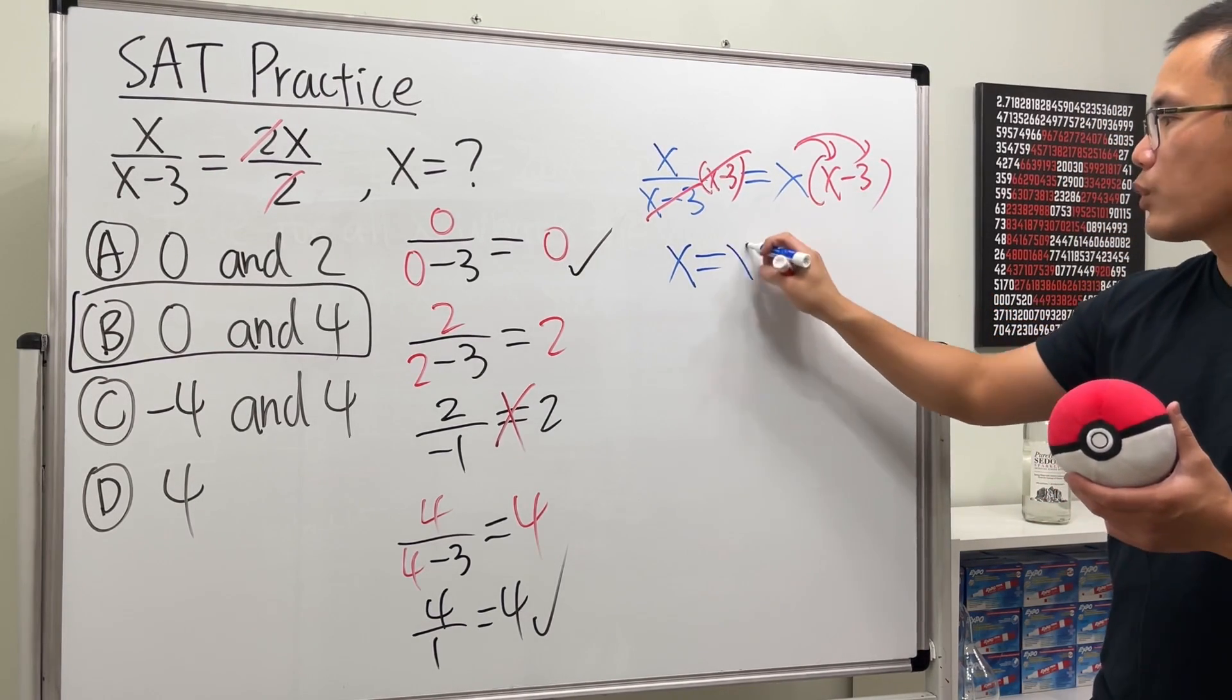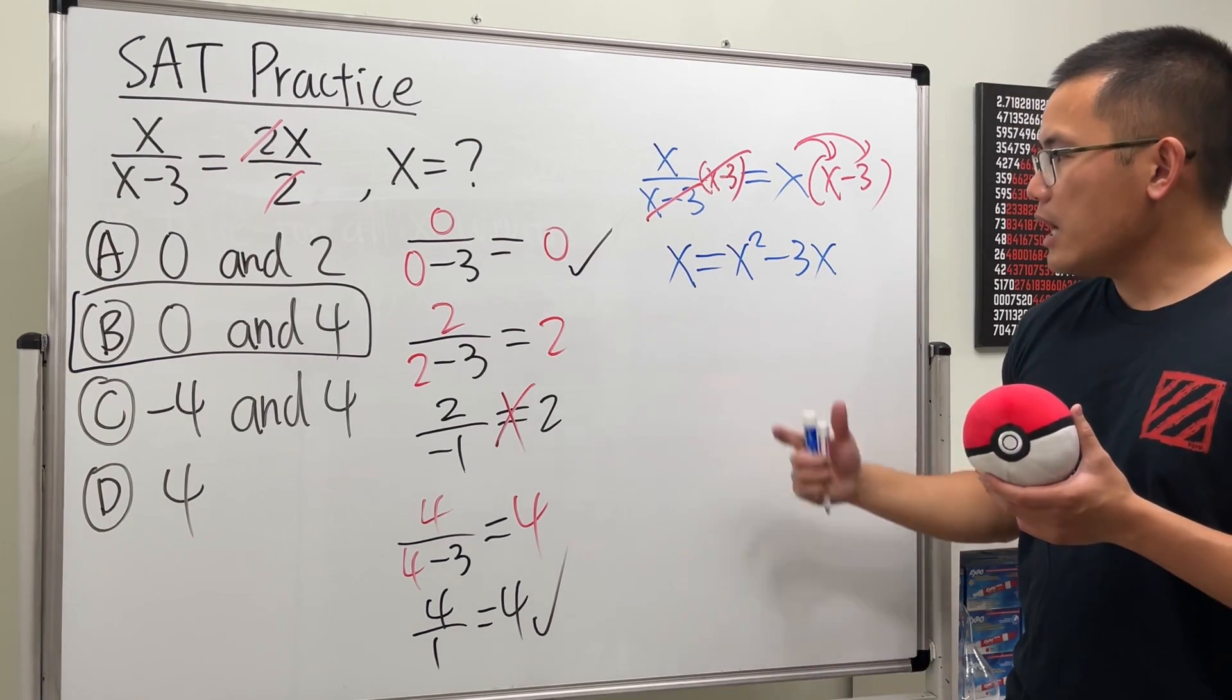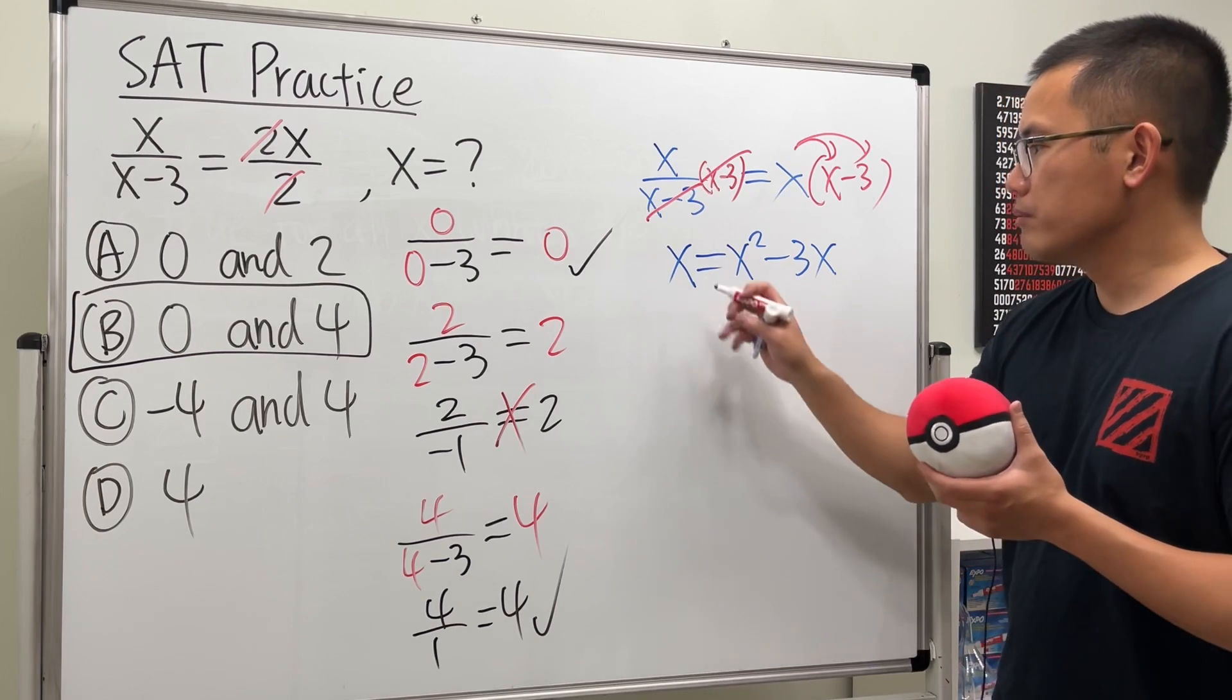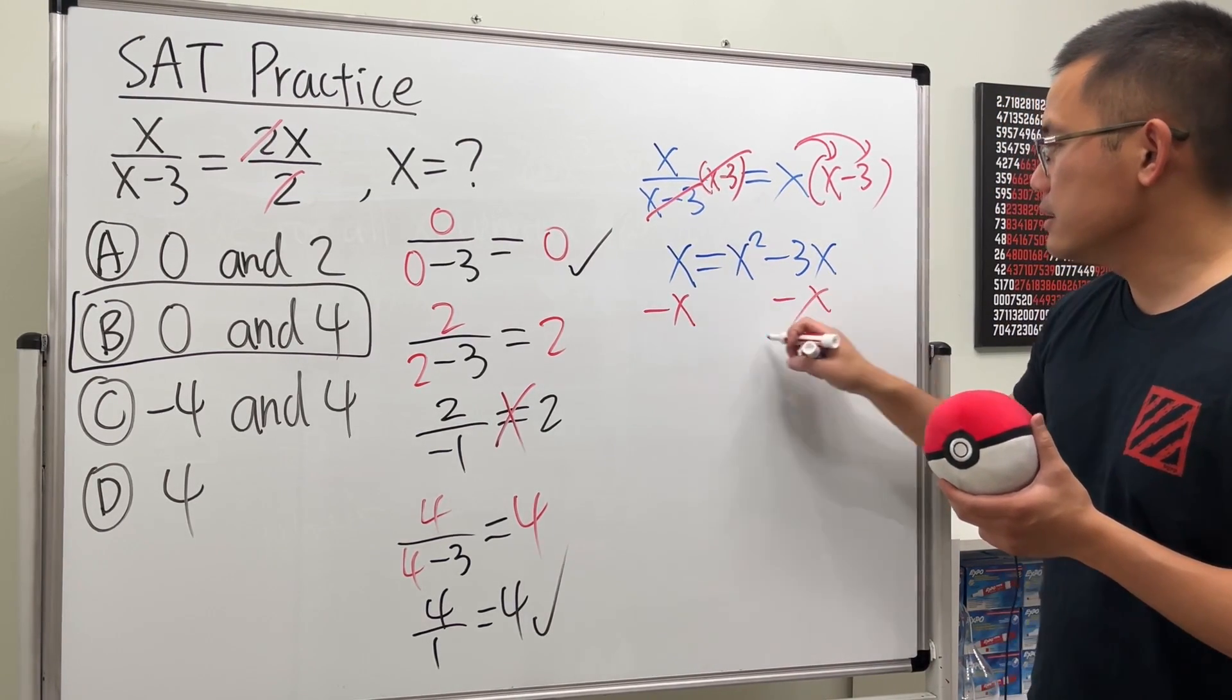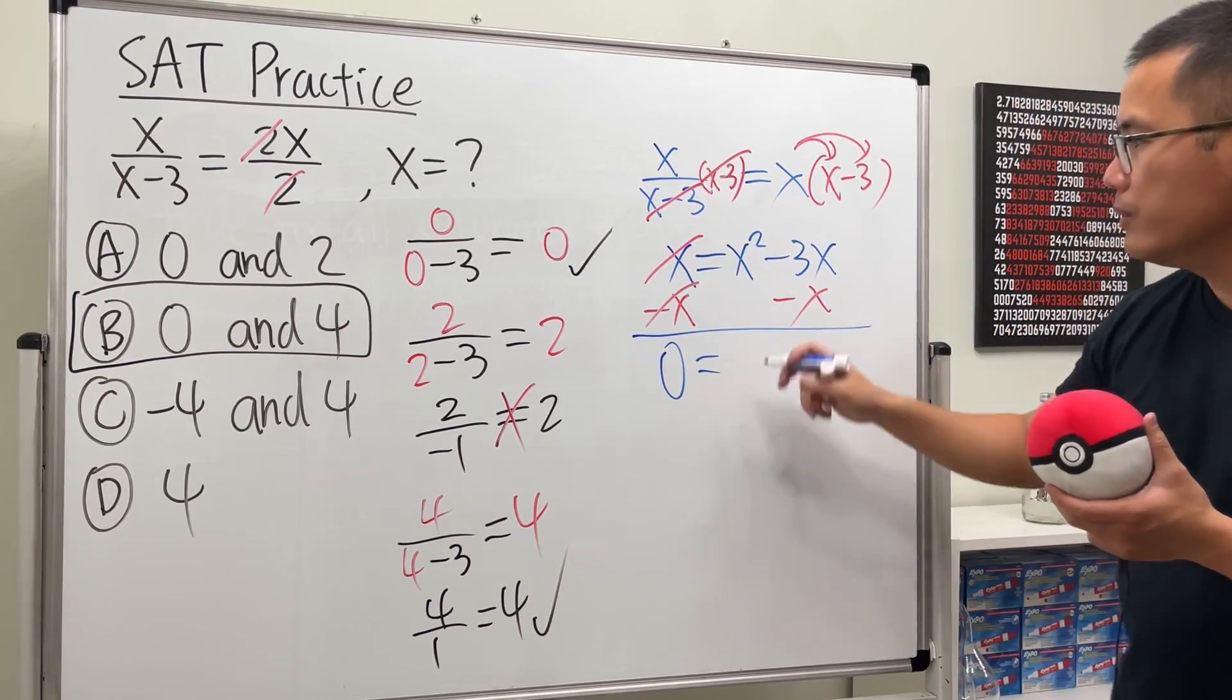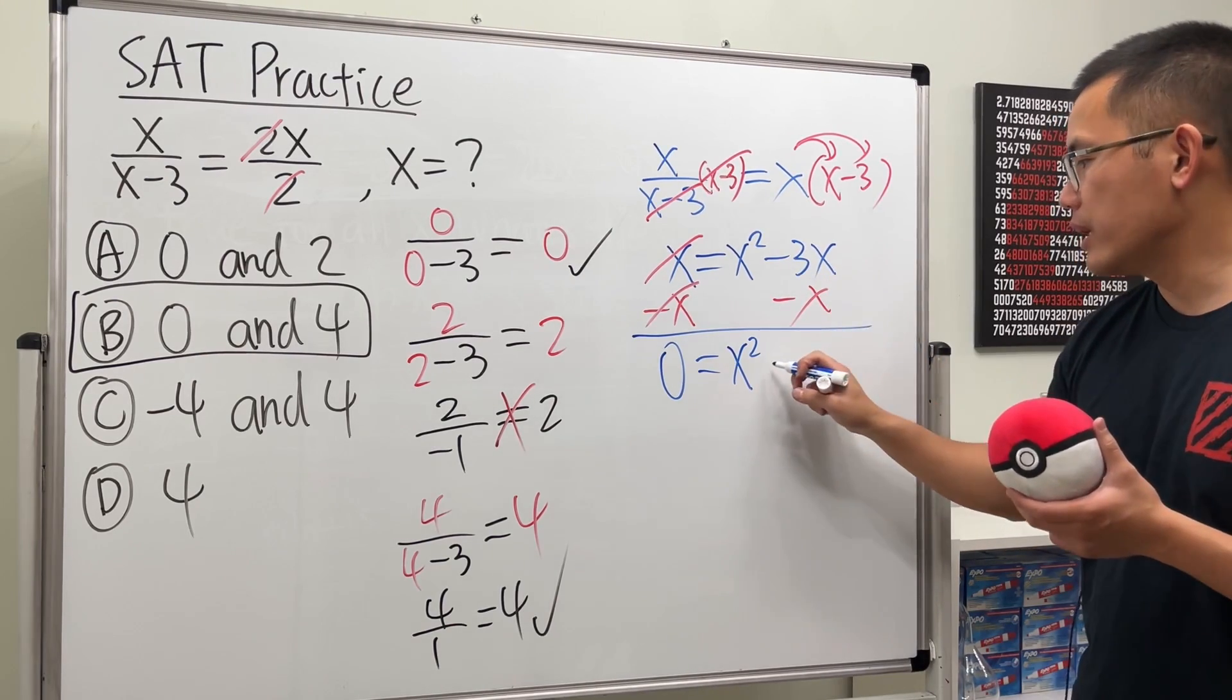All right, and now when we're solving this kind of equation we want to make one side equal to zero. It's easier to make this equal to zero, so that's minus x on both sides like this. So they cancel and we get zero, and that's equal to x squared minus 3x minus x, we get minus 4x.